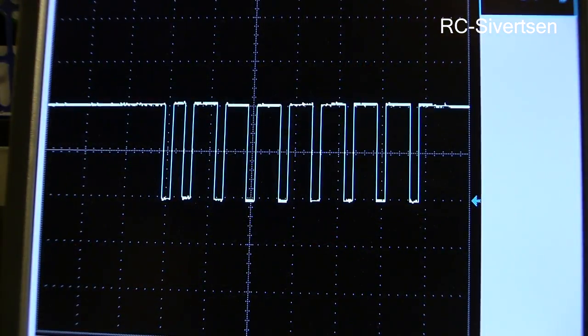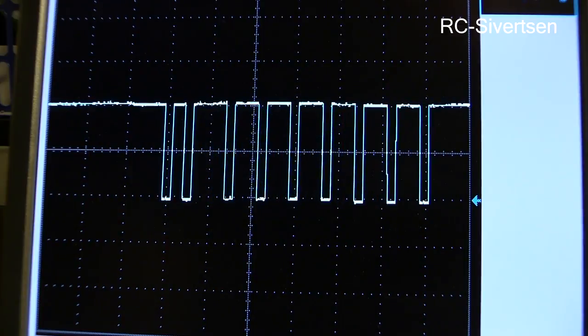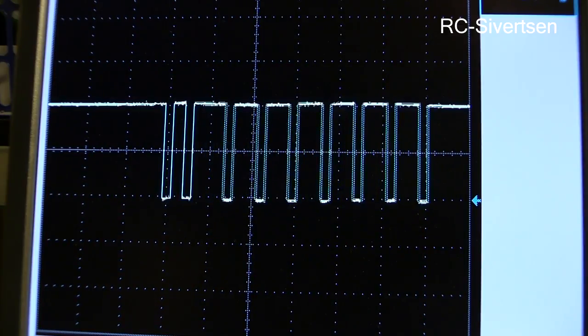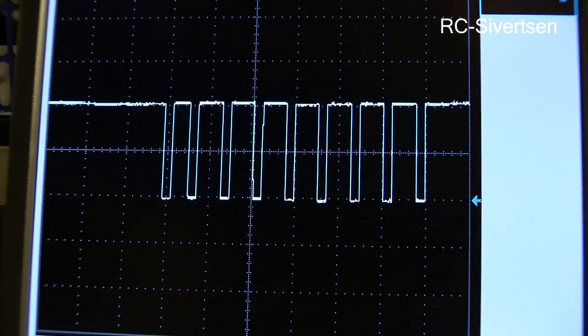Yeah so here you can see this is the PPM signal. It's almost the same as the PWM but as previous with PWM I only had one spike. In here I have all eight spikes in a row in serial. So whenever I move the stick on my radio you can see that the width of the pulse is changing.